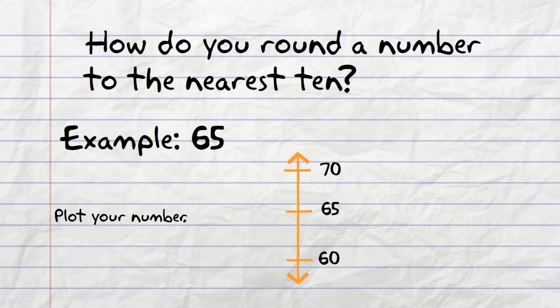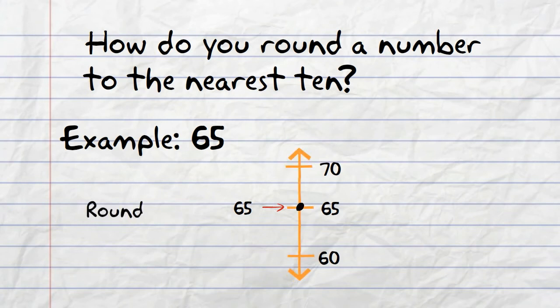The next step would be to plot your number on the vertical number line. 65 is unique in this case because it falls directly on the midpoint. That makes this situation unique.